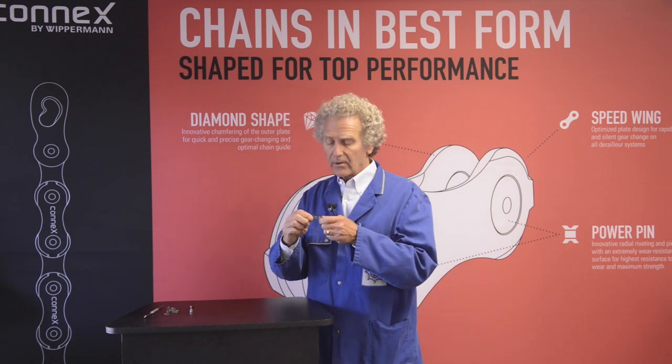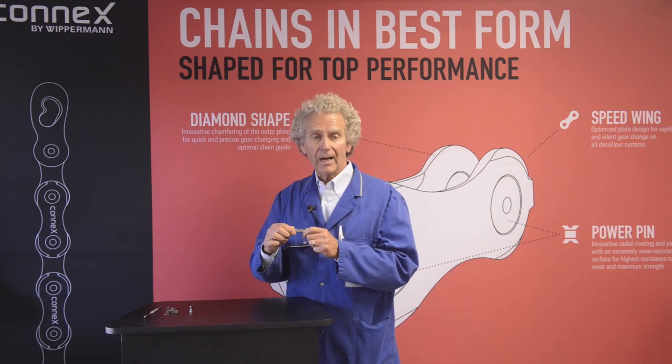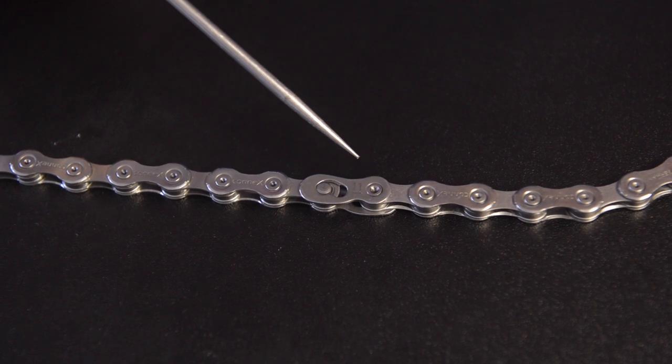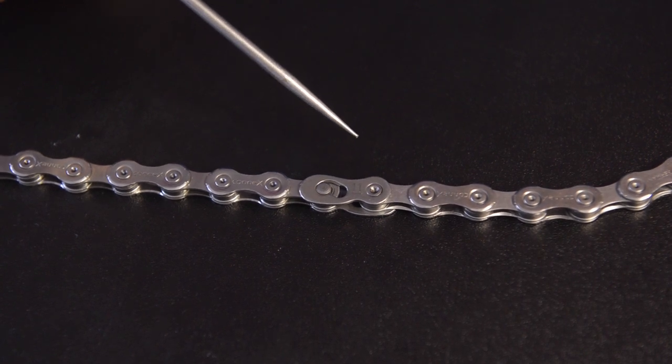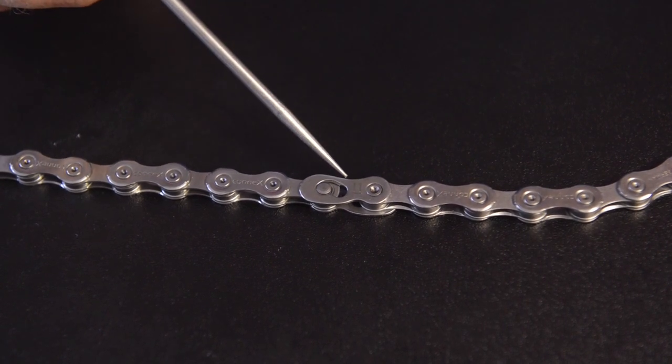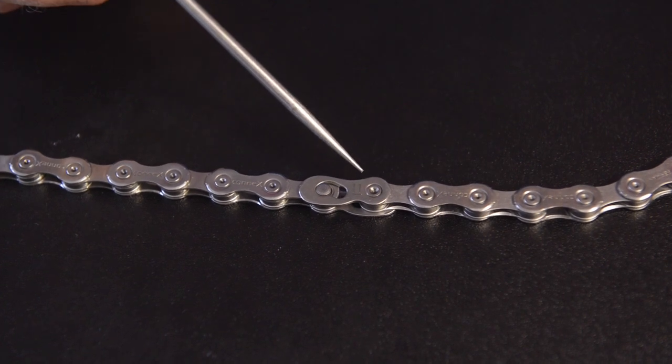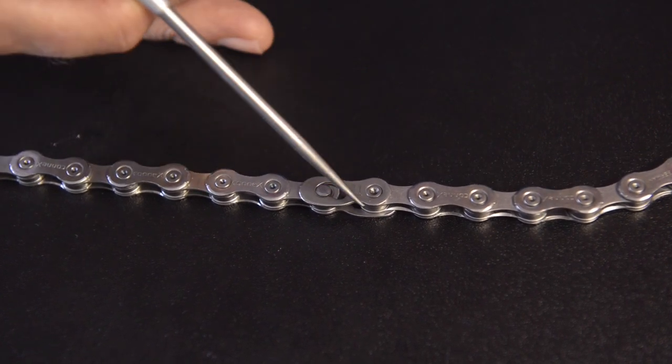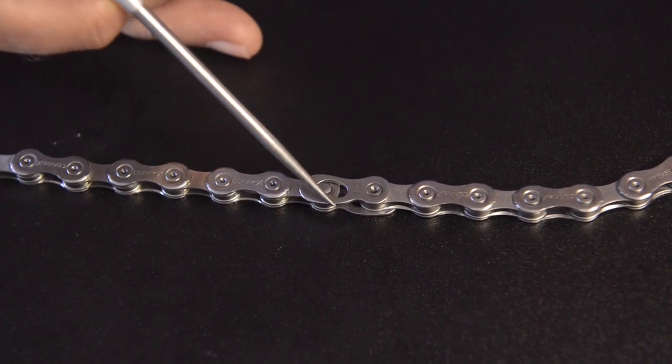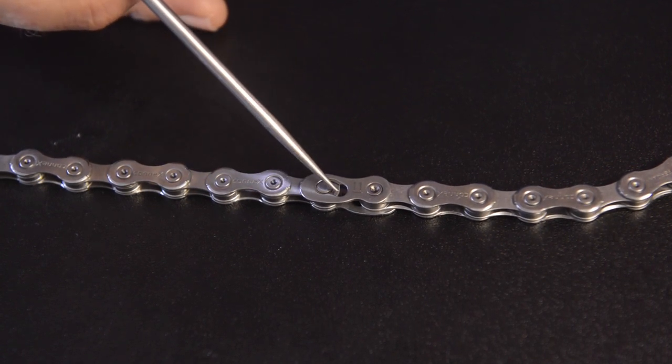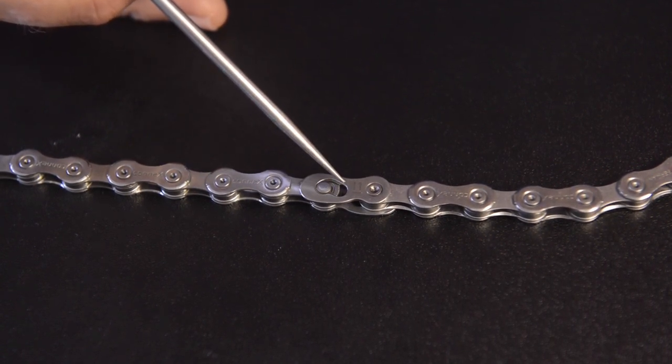Connex link. That brings up another issue. It's possible to put this Connex link in backwards. The Connex link is not symmetric. It'll work if you install it backwards, but if you do, it'll tick when you're in your smallest cog. You want the side with the more constant radius to be the side that's riding against your chainring and your cogs.